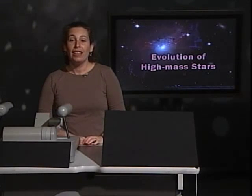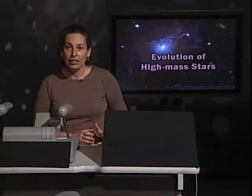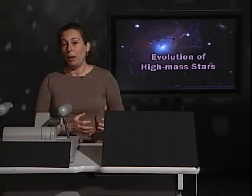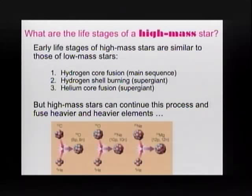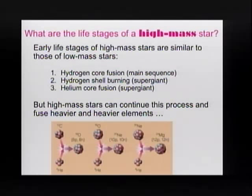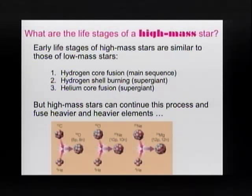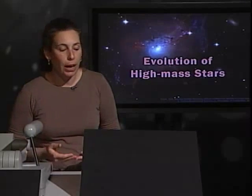High mass stars start their life just like low mass stars. They go through the same process of being a main sequence star, fusing hydrogen into helium in the core, then starting to fuse helium, and then when it gets to carbon, the star has enough mass that it gets hot enough to fuse carbon into heavier and heavier elements. If the star has more than eight times the mass of the sun, it will be able to fuse heavier and heavier elements all the way to iron.